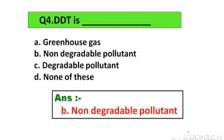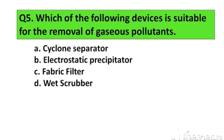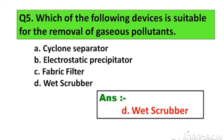Question number 5. Which of the following devices is suitable for the removal of gaseous pollutants? Option A. Cyclone separator, B. Electrostatic precipitator, C. Fabric filter, D. Wet scrubber. The right answer is Option D. Wet scrubber.